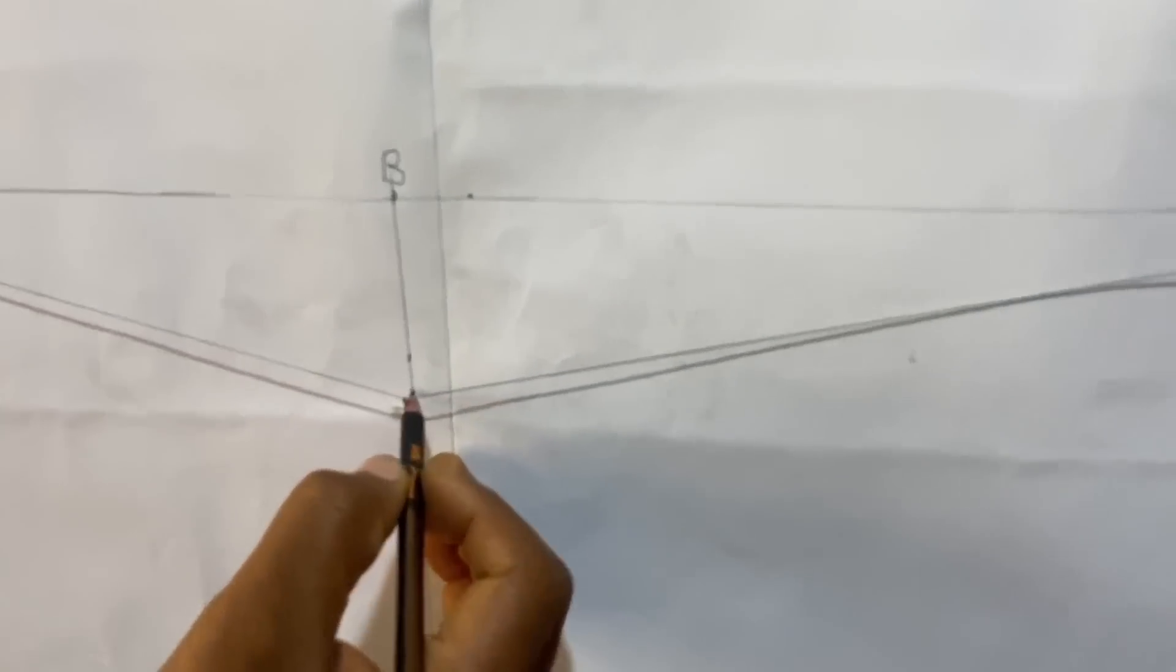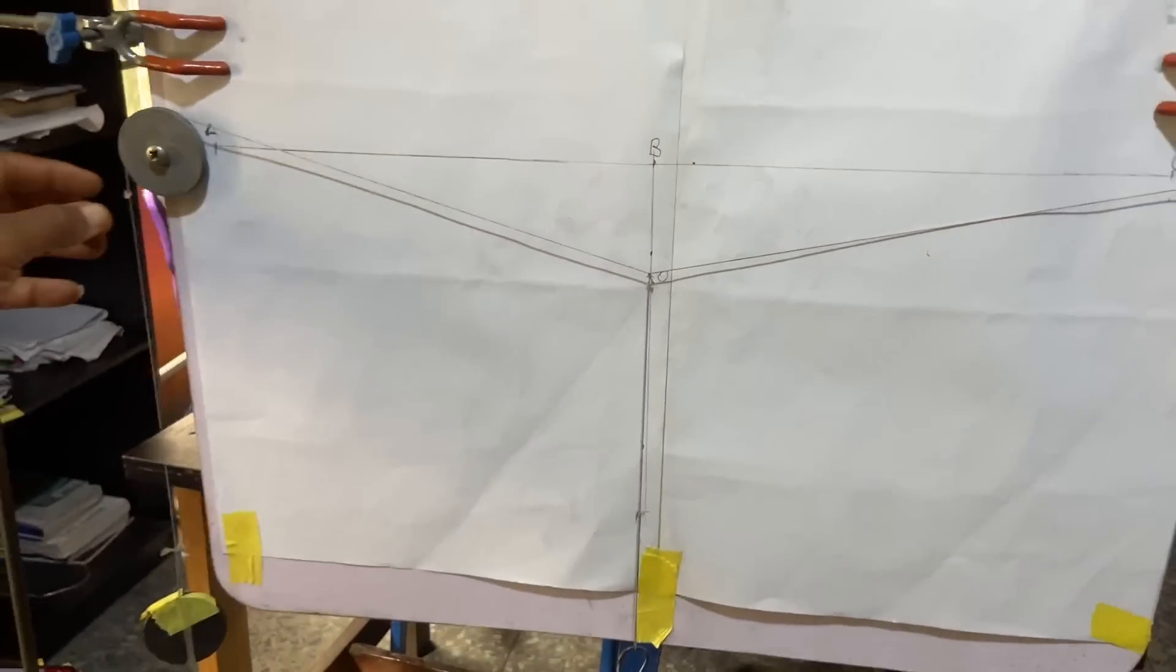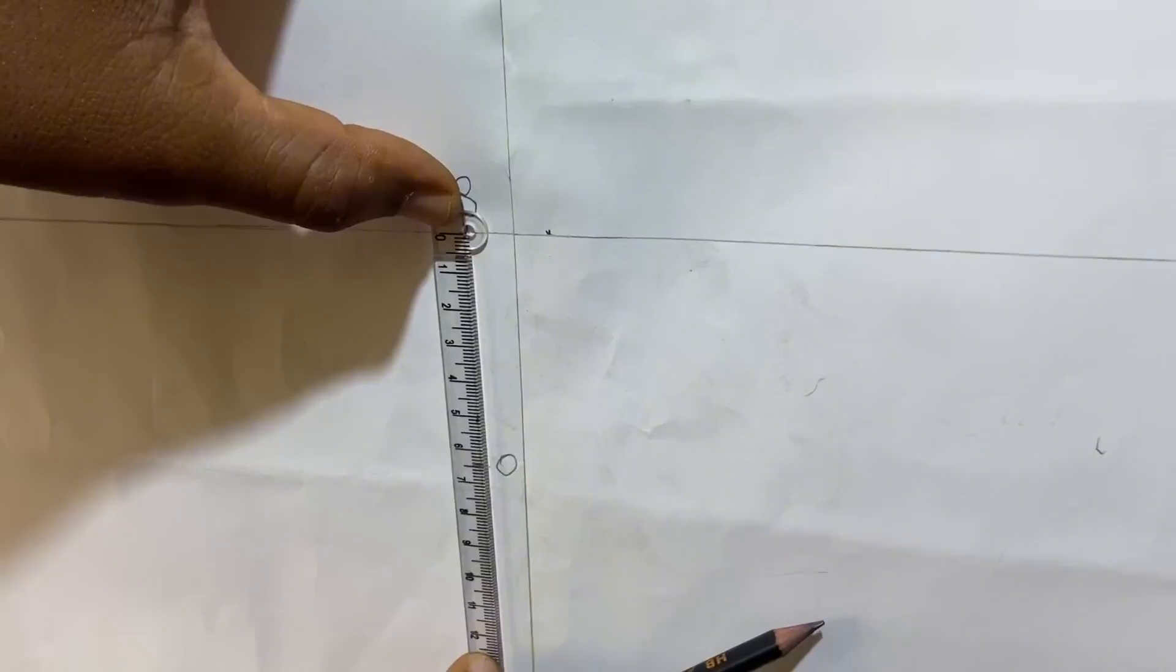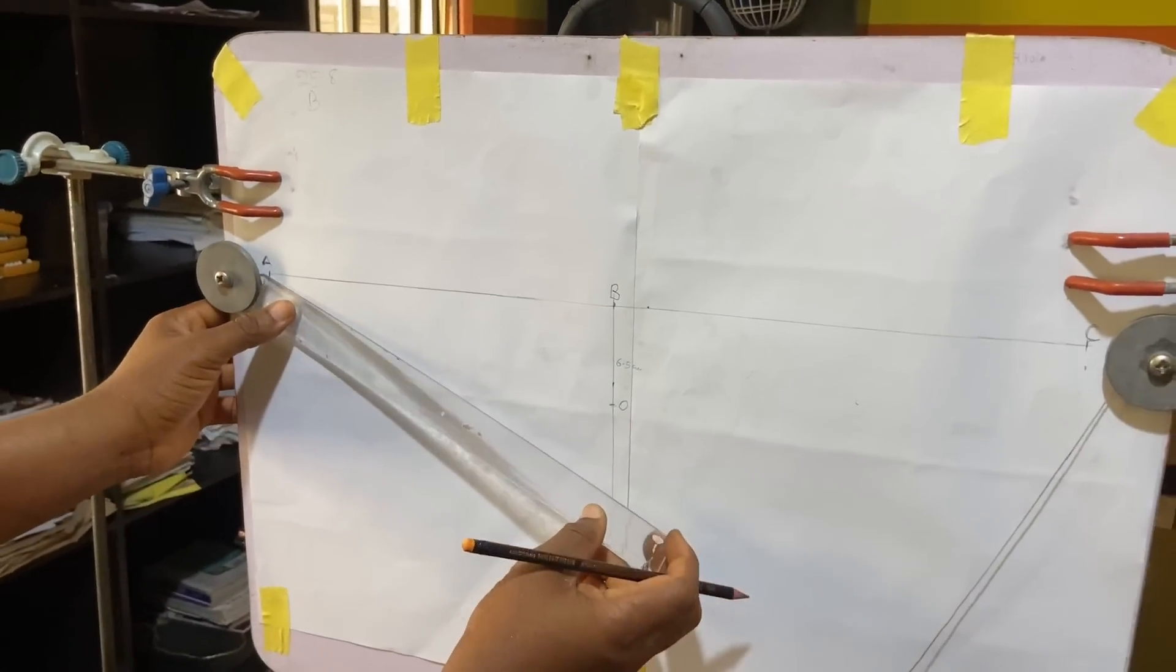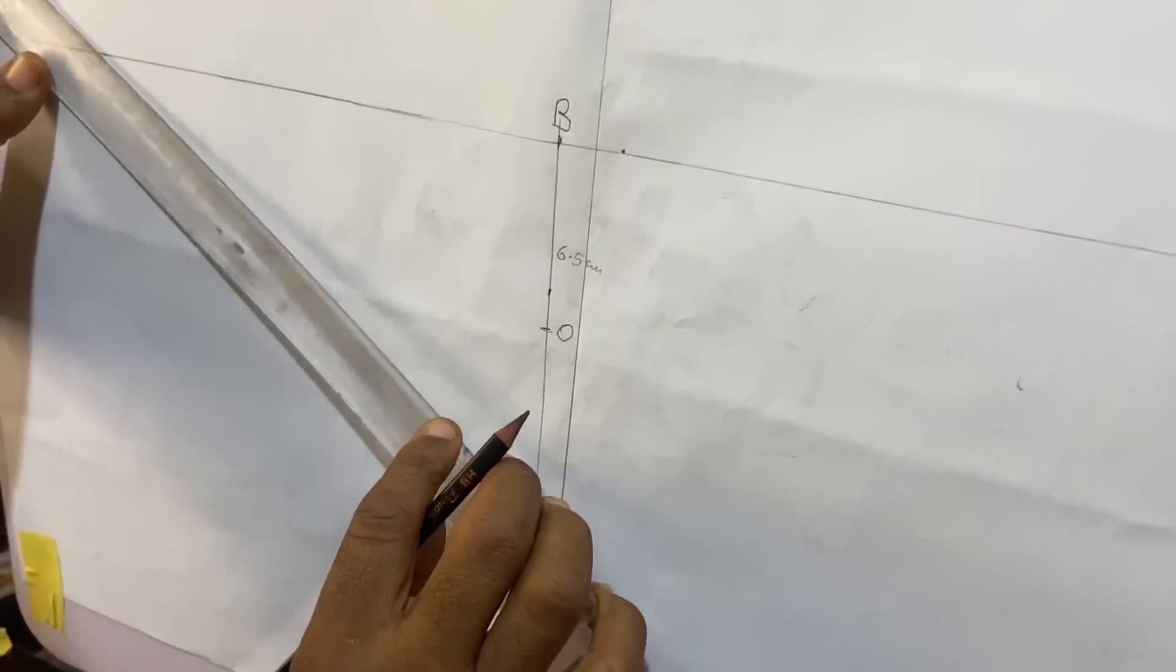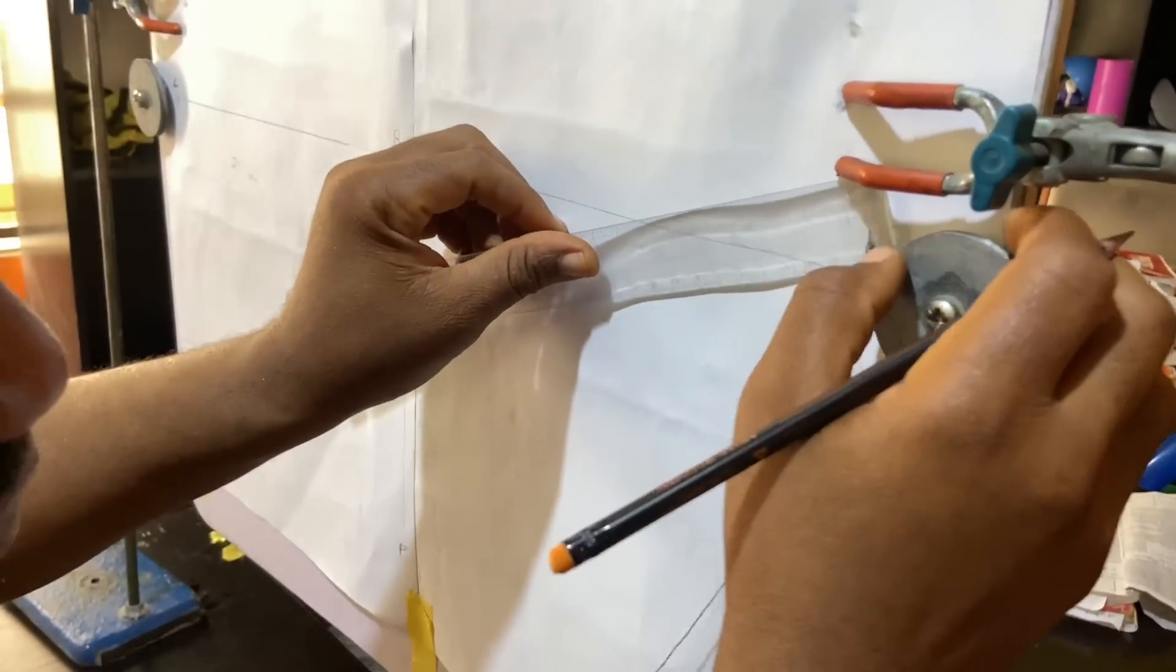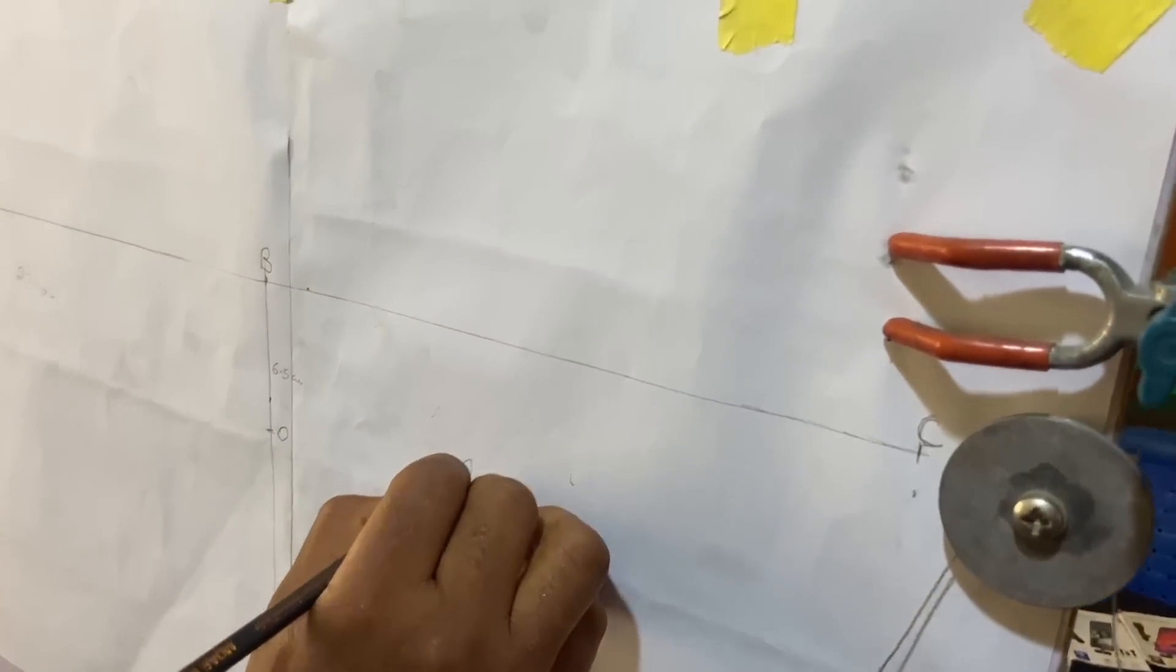This point now, I'm going to mark point O. Then when I mark point O, I will remove this. I'm going to measure BO. So I'm measuring this from B to O: 6.5 cm. So I'm going to measure from A to O: 27.5.